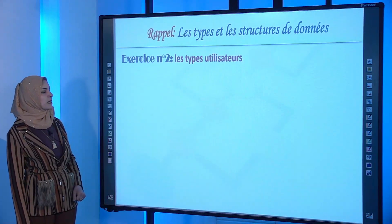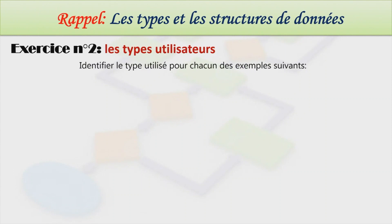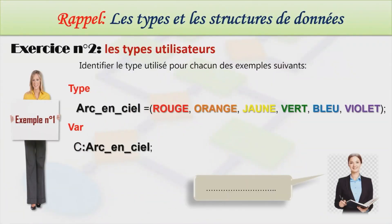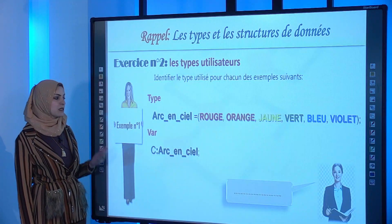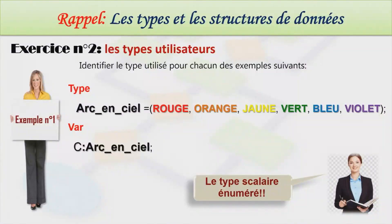Passons à un deuxième exercice pour rappeler les types utilisateurs. Dans le premier exemple, le type arc-en-ciel énumère les valeurs rouge, orange, jaune, vert, bleu et violet, avec la variable C déclarée de ce type. Puisqu'on a énuméré un ensemble de valeurs, on parle du type scalaire énuméré.